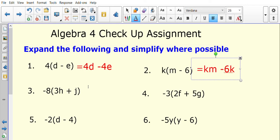Number three, this is negative 8 times the bracket. So negative 8 times positive 3h will be negative 24h. And then negative 8 times positive j will be negative 8j.